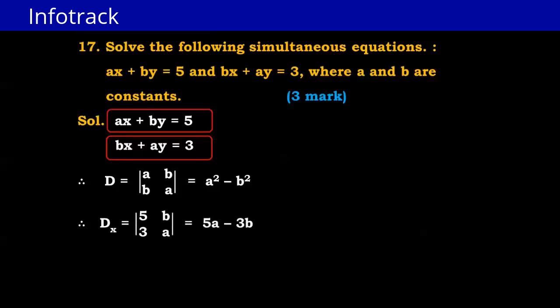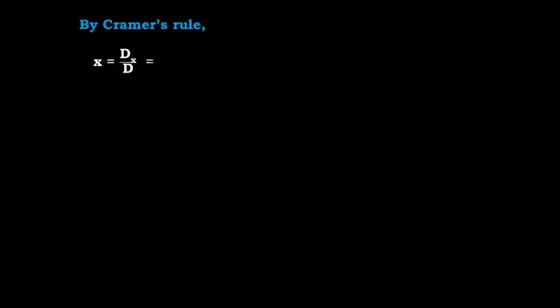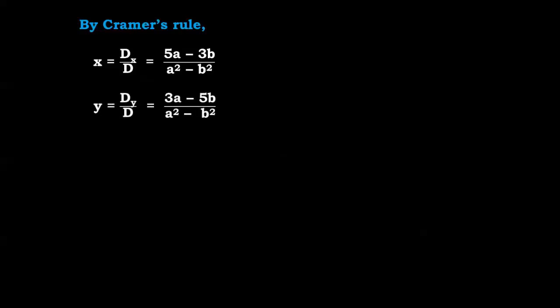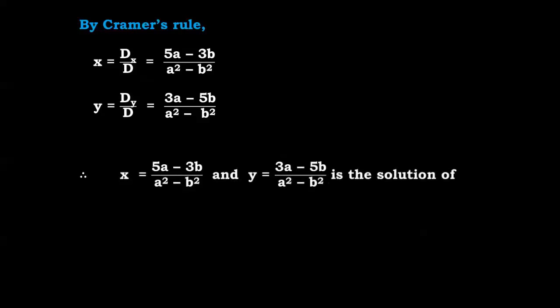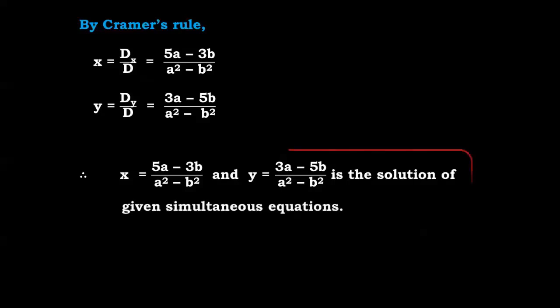For Dy: a1=a, c1=5, a2=b, c2=3. So Dy = 3a − 5b. By Cramer's Rule: x = Dx/D = (5a − 3b)/(a² − b²). This remains as it is — we cannot simplify further. And y = Dy/D = (3a − 5b)/(a² − b²). Therefore x = (5a − 3b)/(a² − b²) and y = (3a − 5b)/(a² − b²) is the solution of the given simultaneous equations.